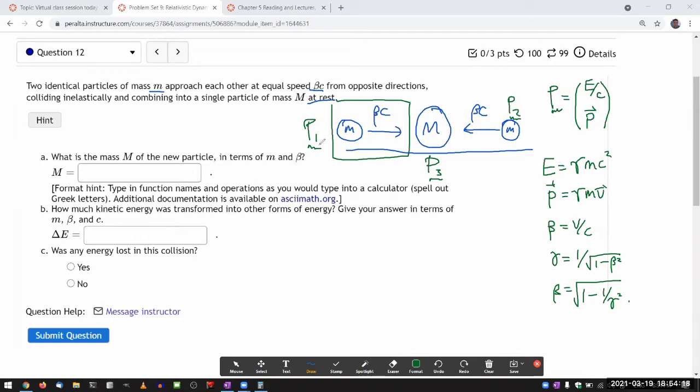So in this four vector notation, I can state the idea of conservation of energy and momentum in this rather simple way: p1 plus p2, which is the total four momentum before collision, is equal to p3, which is the four momentum after the collision.